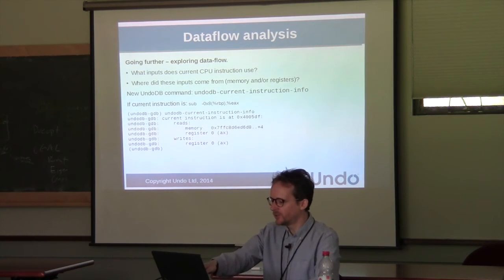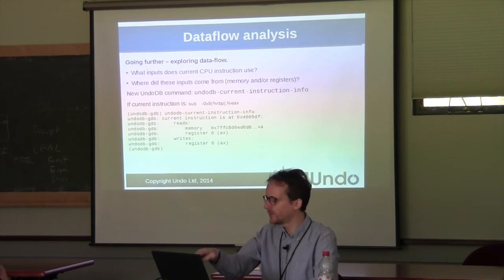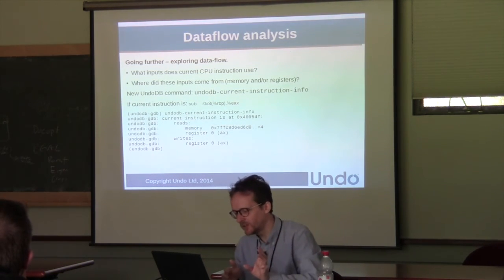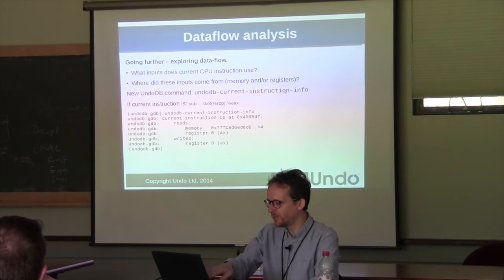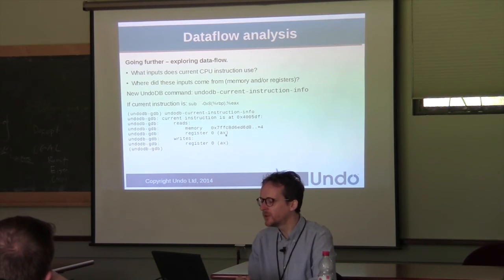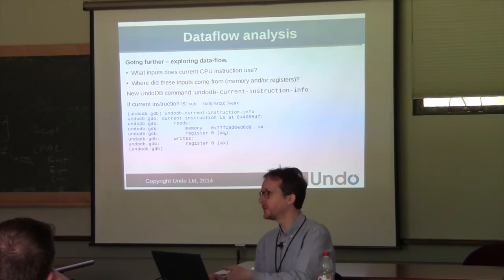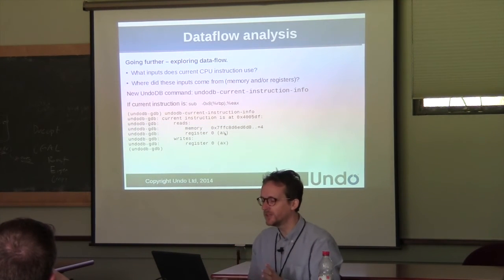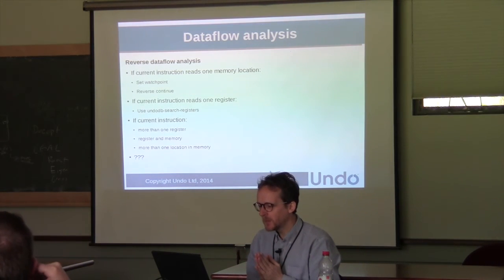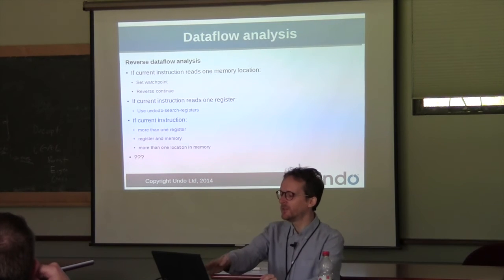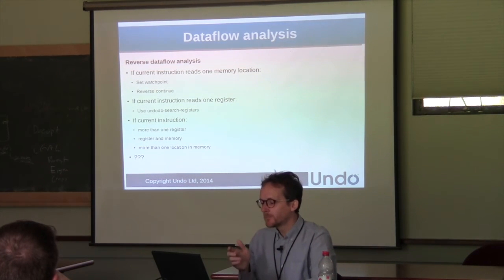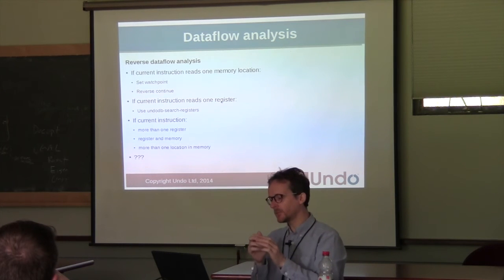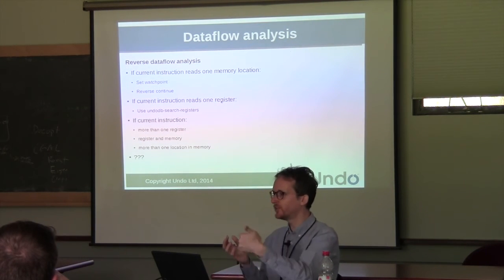This new command looks at the current instruction. For example, it says this instruction is subtracting a value in memory from register AX — an Intel x86 64-bit instruction. UndoDB analyzes that instruction: it knows it reads the memory address that BP points to, and that it's decrementing AX so it must read AX and then write to it. It tells you what the instruction is doing in terms of data flow. We can trace data backwards in time — if the current instruction reads a memory location, we set a watchpoint and go back; if it reads a register, we use the new command to search for the most recent change to that register.